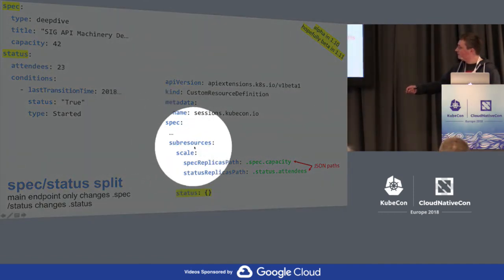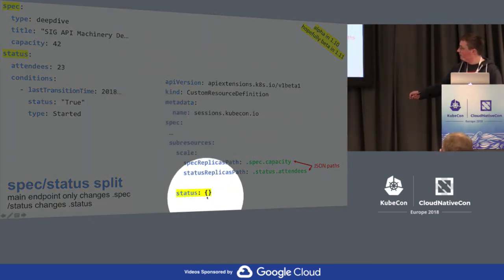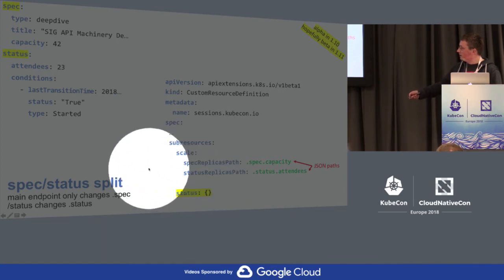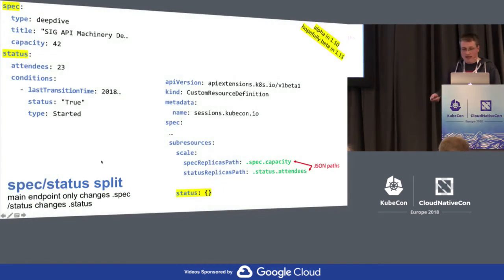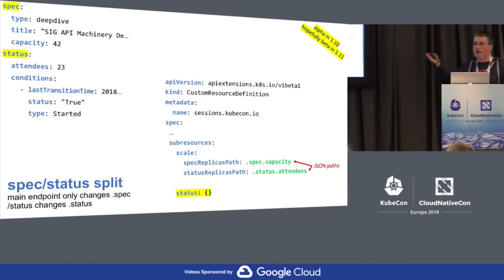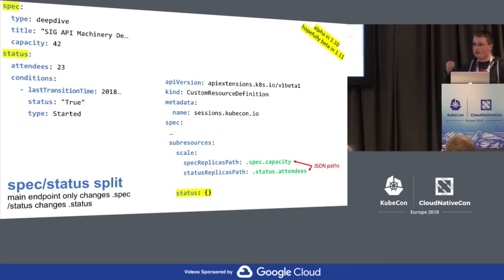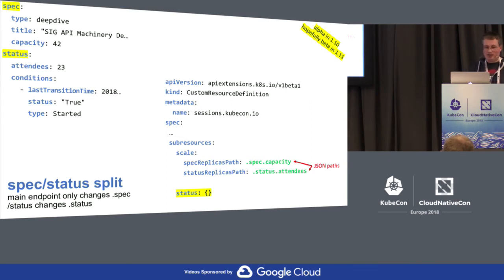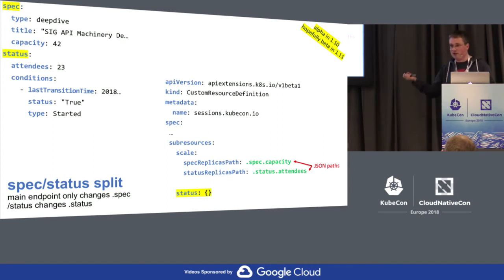There's a second sub-resource called status sub-resource — we call it spec-status split. There are no options at the moment, it's just status. If you use that, you get a /status sub-resource. The effect is that if you write to the main resource, you can only change the spec; if you want to change status you have to write to the status sub-resource. The reason is security: your controllers should change status, so you need an RBAC rule for that, while your users should just change spec. You can split those two use cases.